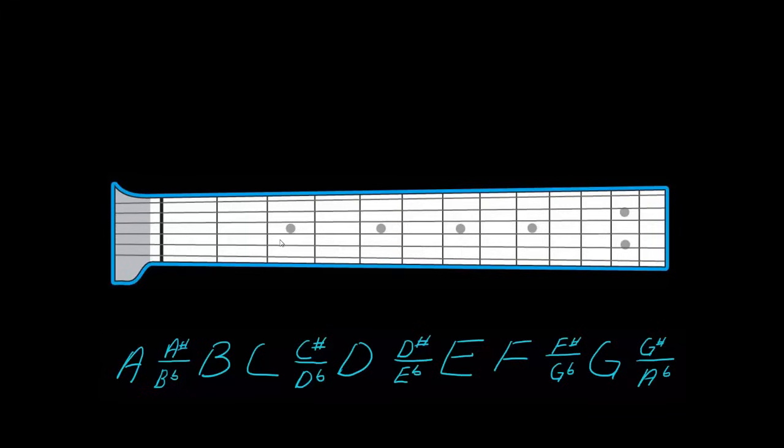So if I were to take that A minor and capo up one, two, three frets. In order to keep that same relationship I would have to put these fretted notes there. It looks exactly like an A minor but it's no longer A minor. What would be the new name of this chord?